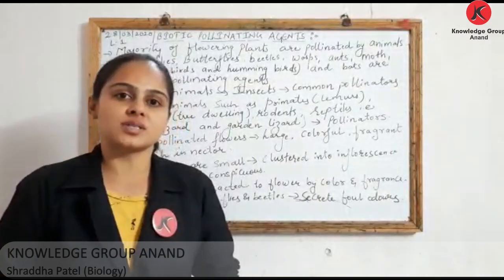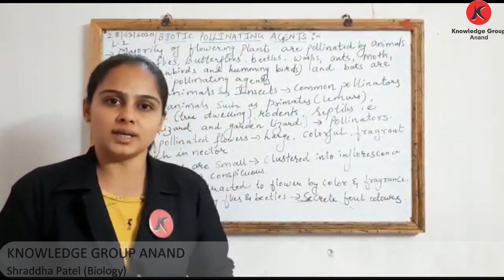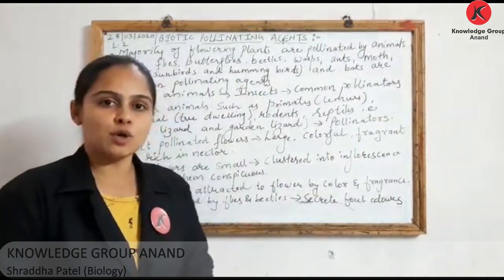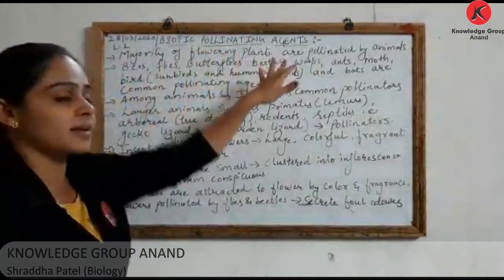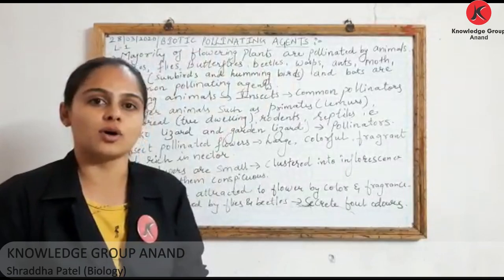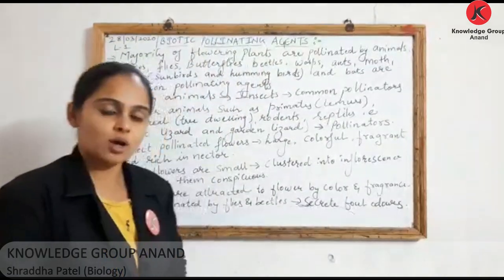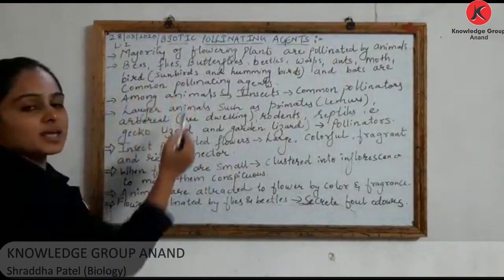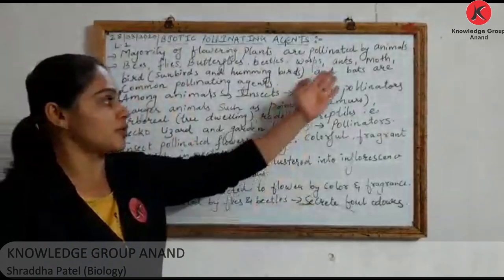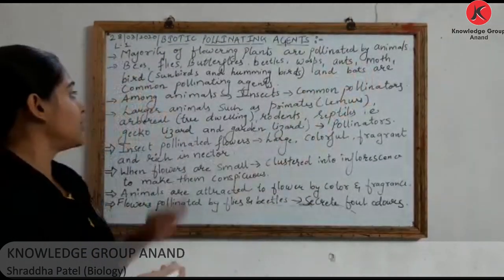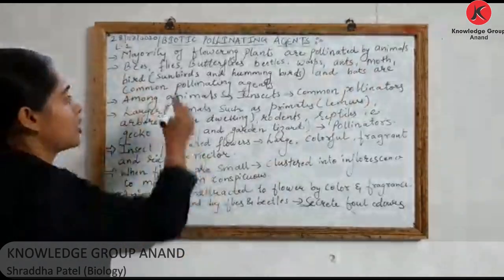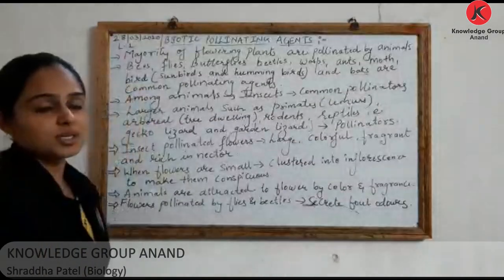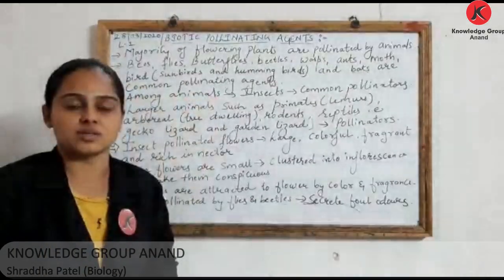In the previous lecture we discussed abiotic pollinating agents in detail — how plants are pollinated by wind and water. In today's video we are going to discuss biotic pollinating agents. Biotic refers to living organisms. Common pollinating agents include bees, flies, butterflies, beetles, and birds — such as sun birds and hummingbirds.